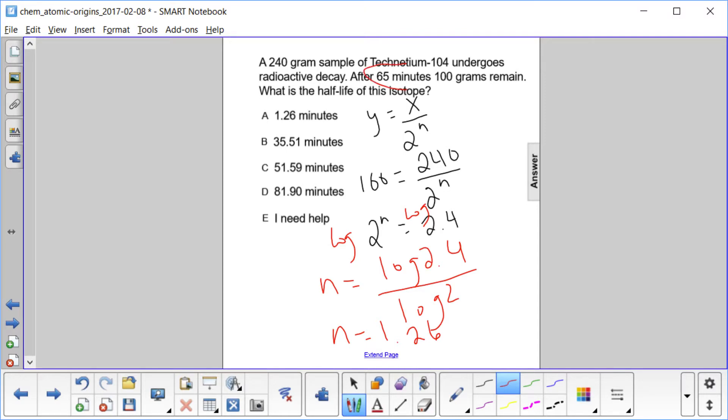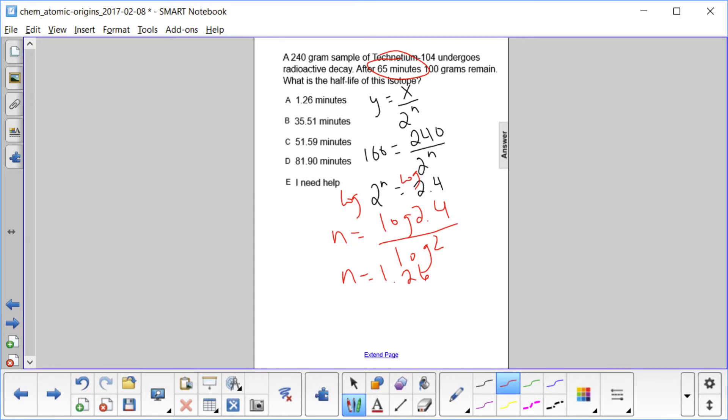We have 65 minutes total, so we have to find out how many of those minutes is just a single half-life. So take that 65 minutes, divide that by the number of half-lives that have passed, and you'll get the minutes per half-life.